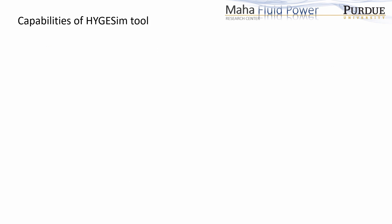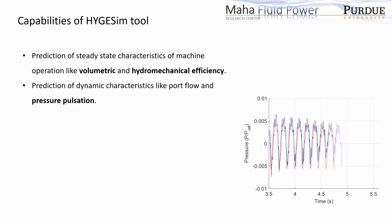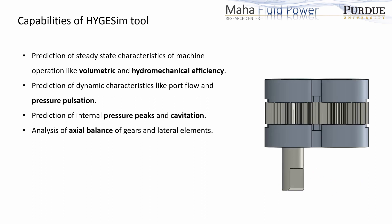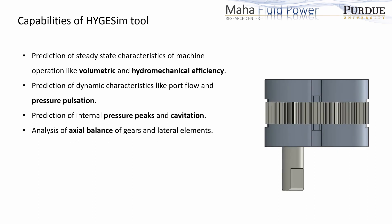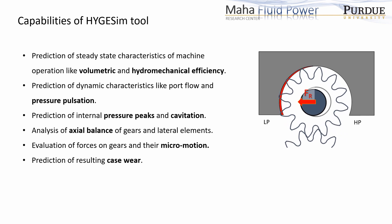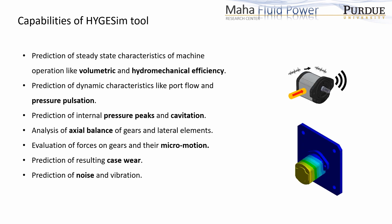The simulation tool HYGsim has multiple capabilities. It allows prediction of steady-state characteristics of machine operation like volumetric and hydromechanical efficiency, and dynamic characteristics like port flow and pressure pulsation. It is also able to predict pressure peaks and cavitation in the machine. Moreover, the tool has modules for detailed analysis of axial balance of gears and lateral elements, prediction of forces acting on gears, their micromotion, resulting case wear, and noise and vibration.